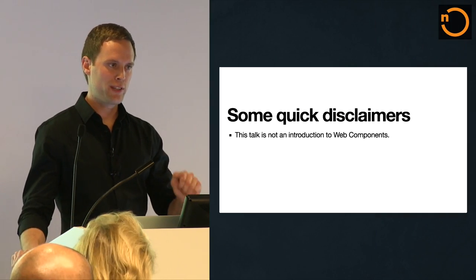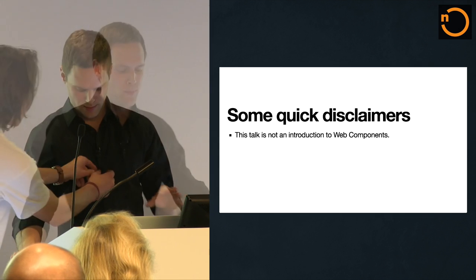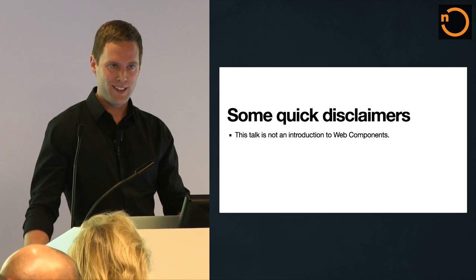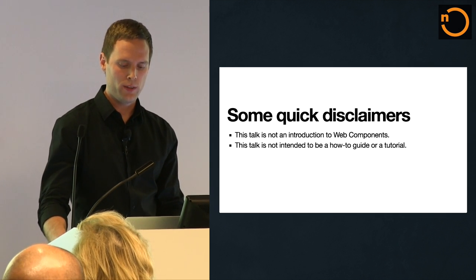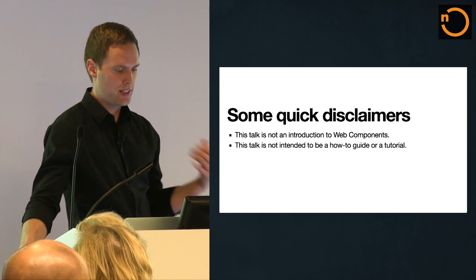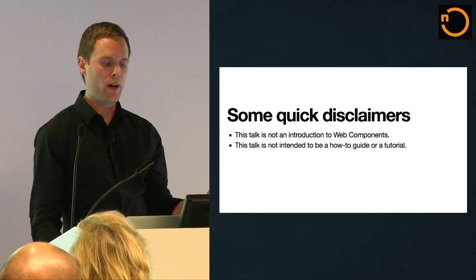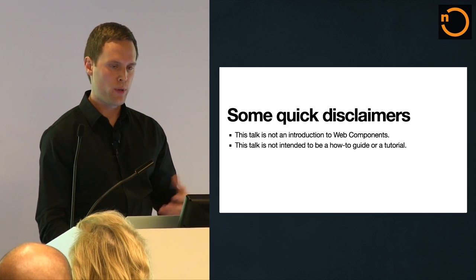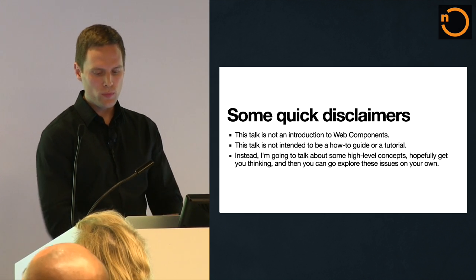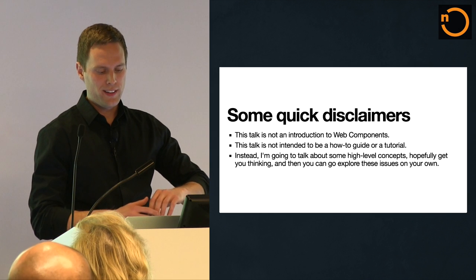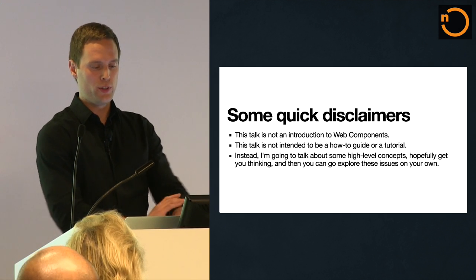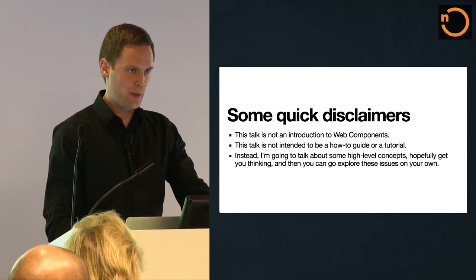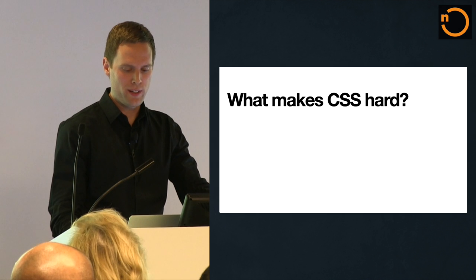Some quick disclaimers about this talk: I have a lot to talk about, and every Web Components talk I've ever been to has spent half the time explaining what Web Components is — so I'm not going to spend a lot of time on that. This talk is not intended to be a how-to guide or a tutorial. I wanted it to be more about the things I was thinking when I first heard of Web Components — some of the ways Web Components will completely change how we write CSS for the better. This will be high level, it'll start you thinking, and then you can use these concepts and play around. Keep an open mind — a lot of what I'm going to say could very well be wrong.